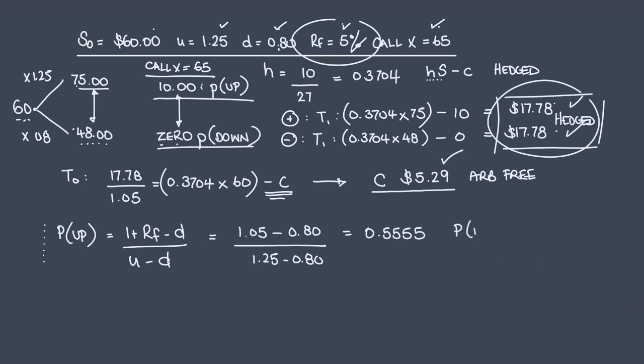That means the probability of a down move, using the law of total probability for mutually exclusive and exhaustive events, it must be 1 minus that, which is going to be 0.4445.